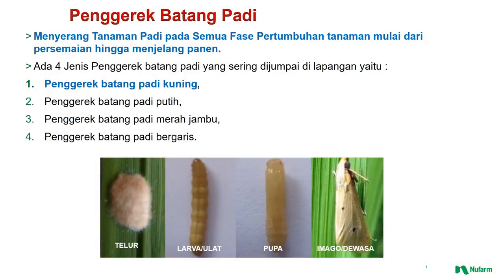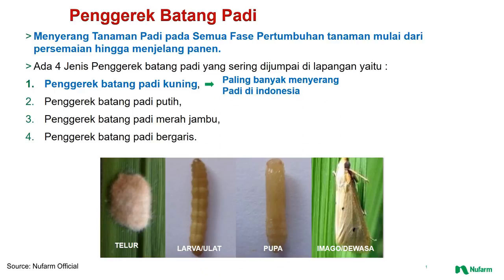Penggerek batang padi menyerang tanaman padi pada semua fase pertumbuhan tanaman, mulai dari persemaian hingga menjelang panen. Ada empat jenis penggerek batang padi yang sering dijumpai di lapangan: yang pertama, penggerek batang padi kuning, yang merupakan paling banyak menyerang padi di Indonesia.